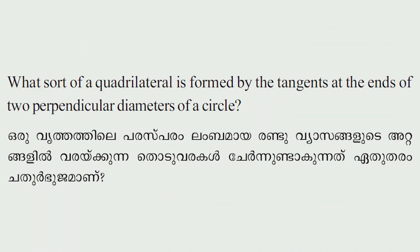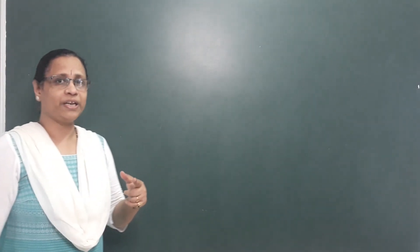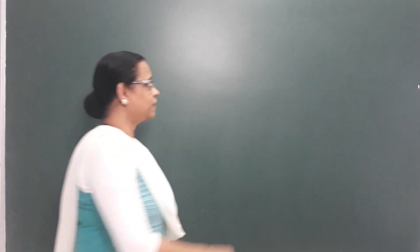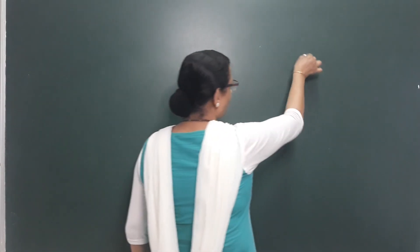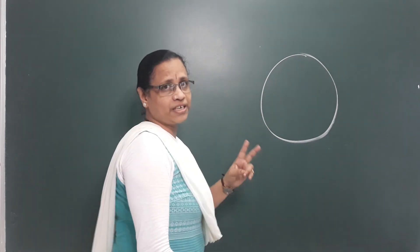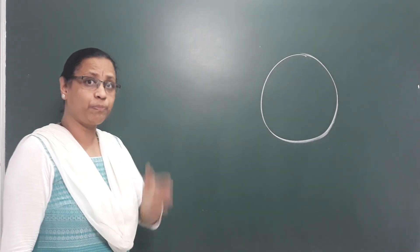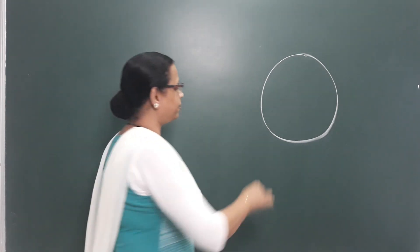What sort of quadrilateral is formed by the tangents at the end of two perpendicular diameters of a circle? One circle has two diameters, and the two diameters are perpendicular diameters.